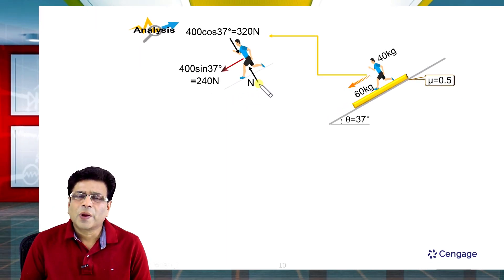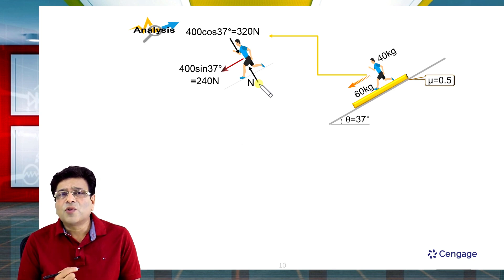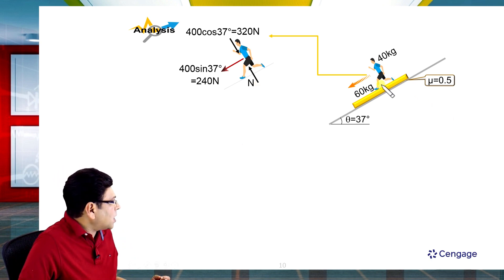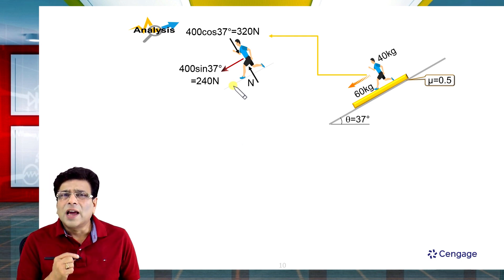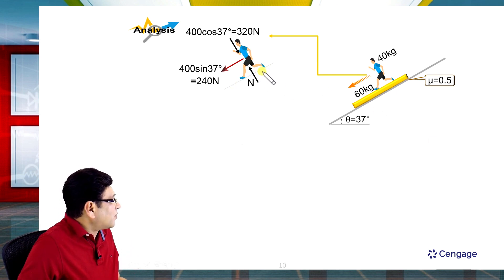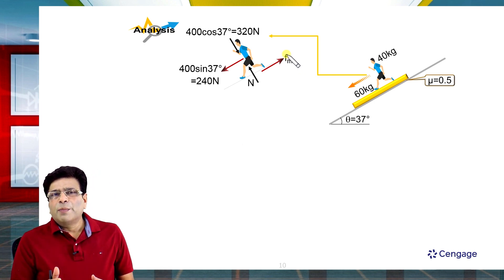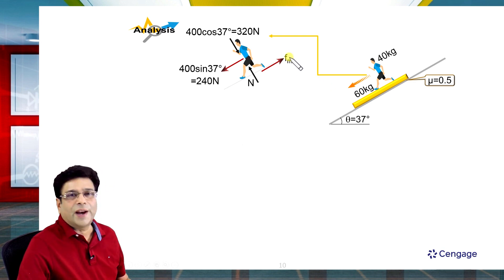Friction in walking and running is static in nature. Static friction is a self-adjusting force — its magnitude and direction are unknown. We assume the friction force offered by the platform on the man acts in the upward direction along the incline. This is an unknown quantity that we will solve for.